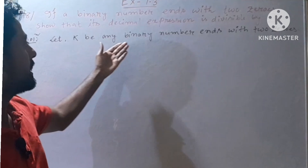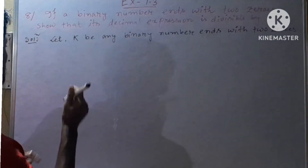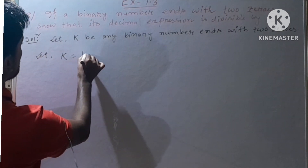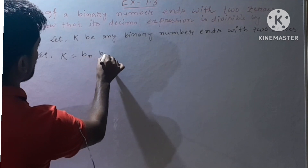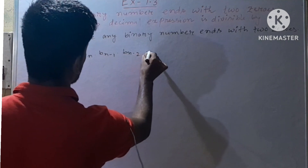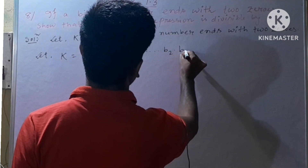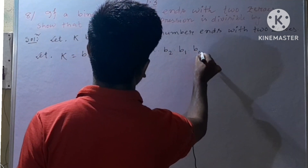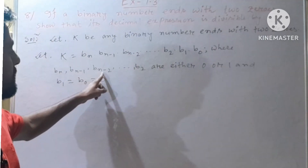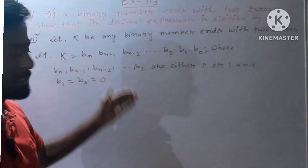Let k be any binary number ending with two zeros. Let k be written as b_n, b_{n-1}, b_{n-2}, dot dot dot, b_2, b_1, b_0. Here b_n, b_{n-1}, b_{n-2}, dot dot dot, up to b_2 are either 0 or 1, since our binary number uses only digits 0 or 1.